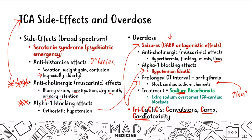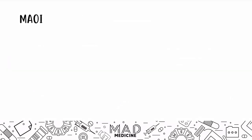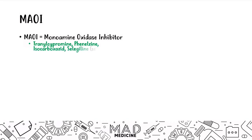It's very important to understand TCAs — especially their names and which drugs are TCAs. Moving on, let's talk about monoamine oxidase inhibitors, or MAOIs. These drugs include tranylcypromine, phenelzine, isocarboxazid, and selegiline.